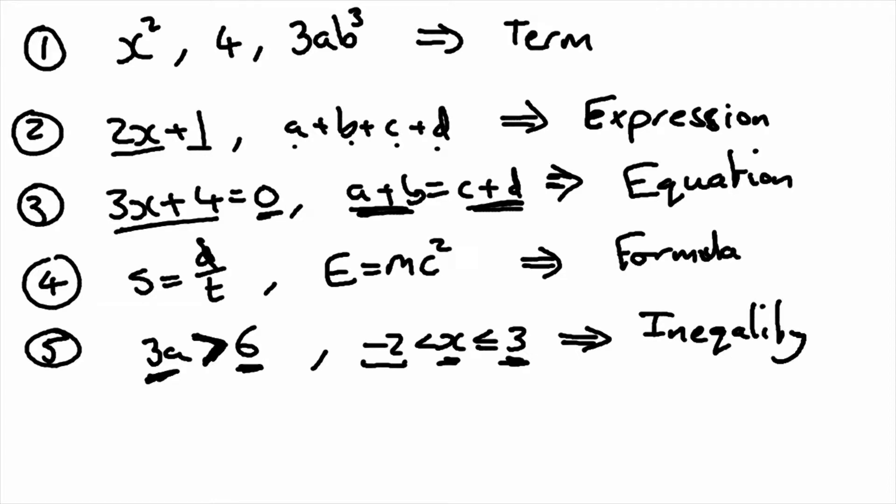And our last one, 3 lots of a plus 1, and we've got 3 lines here. Now these three lines say it's always equal to, so whatever our value for a is, the right hand side and the left hand side are always the same.